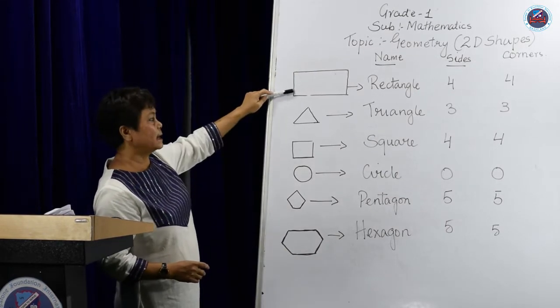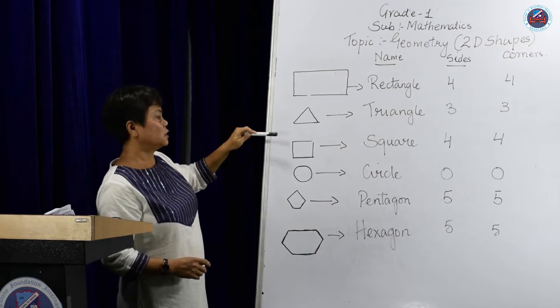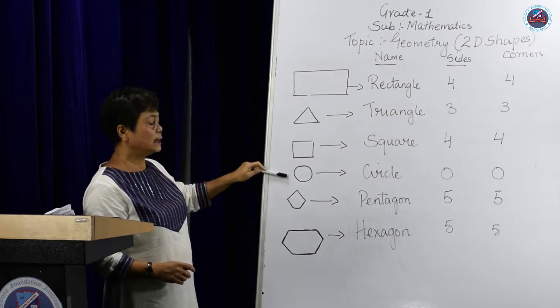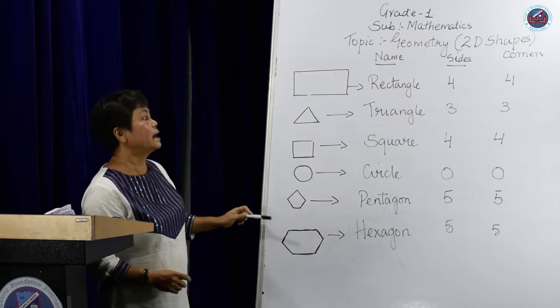This is a rectangle, a triangle, a square, a circle, a pentagon and a hexagon.